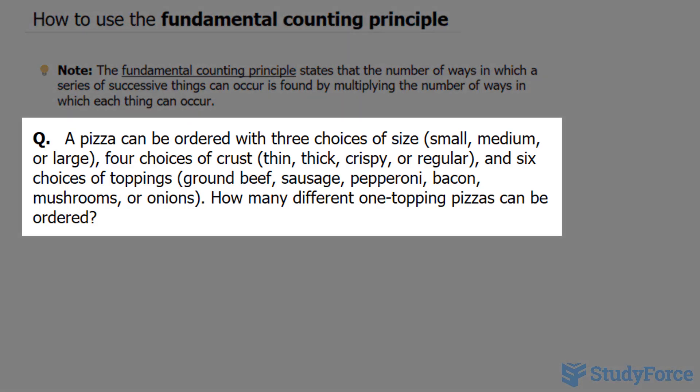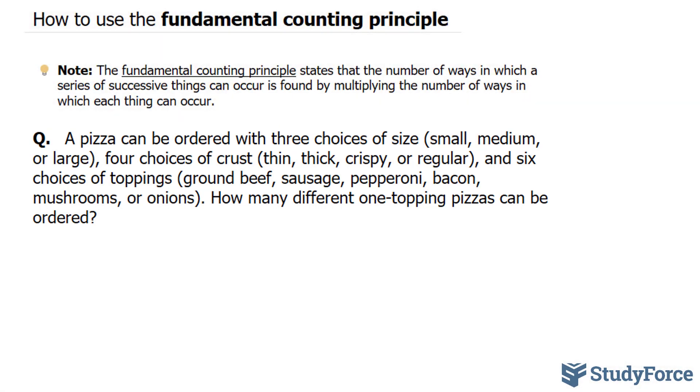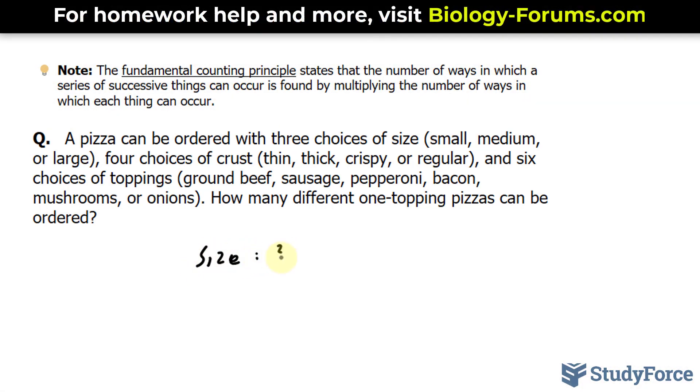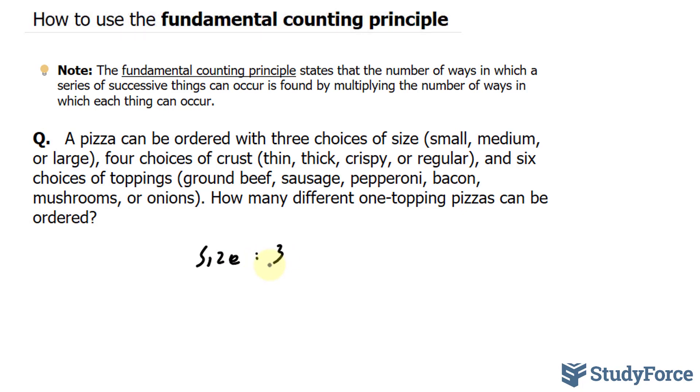A pizza can be ordered with three choices of size: small, medium, or large. So for the sizes, we have three options. There are four choices of crust: thin, thick, crispy, or regular. So I'll write down crust, four.